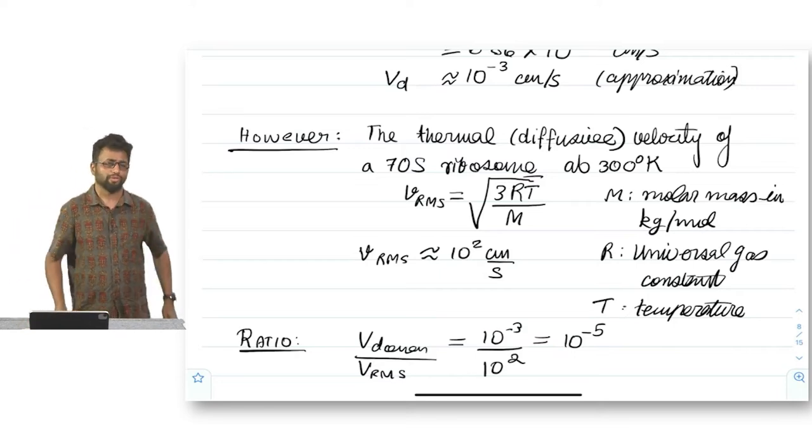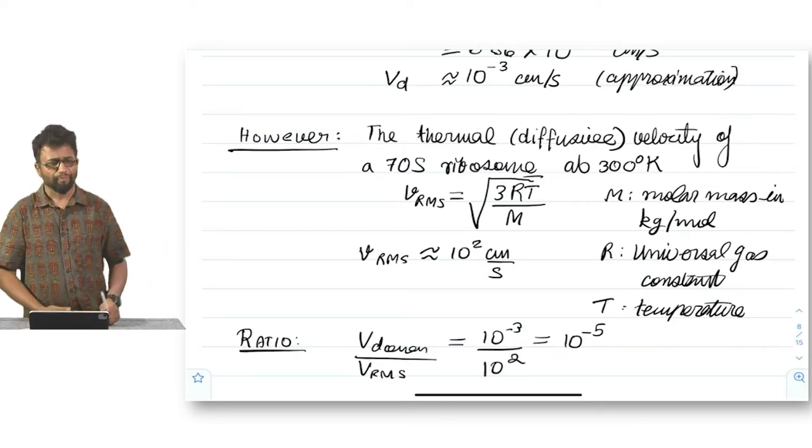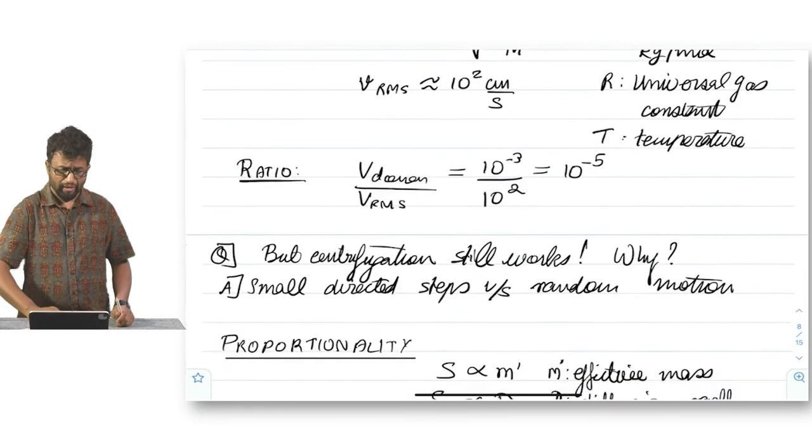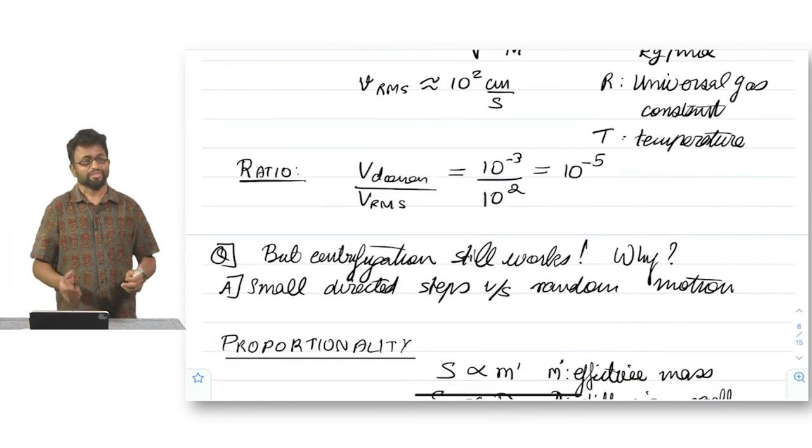Now, please compare this 10 to the power minus 3 centimeters per second to 100 centimeters per second. That is to say, one thousandth of a centimeter per second is the RMS velocity, I am sorry, is the downward velocity, whereas 100 centimeters per second, that is to say, 10,000 times larger is the RMS velocity than the centrifugal velocity. So that means we should never be able to centrifuge because the velocity of one is much greater than the other.